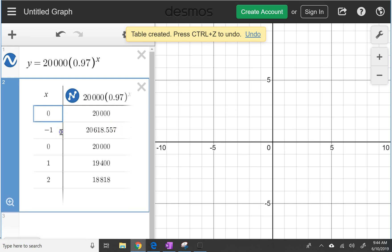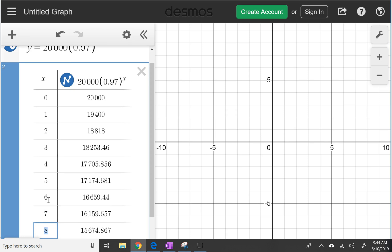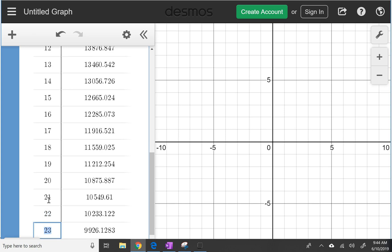So negative values don't make sense in this context for the domain. So our question is when is it going to get down to five hundred dollars? And so we can just keep on trucking, unintended, until we get down to five hundred dollars.